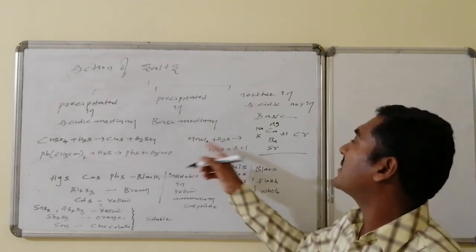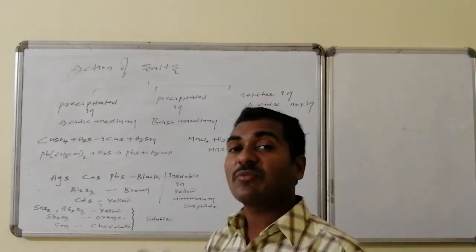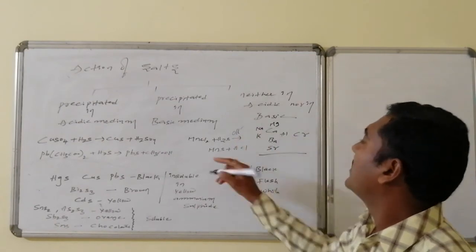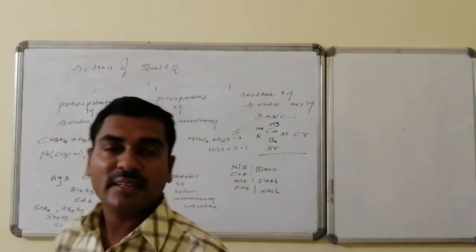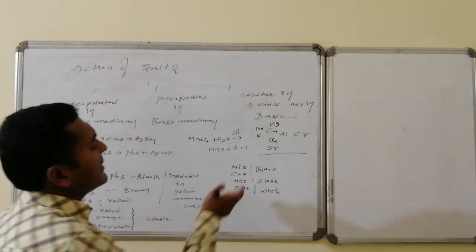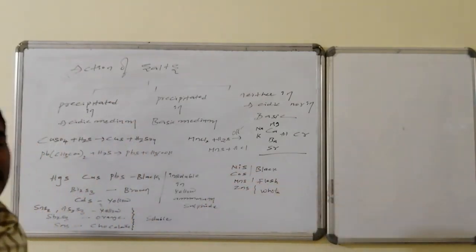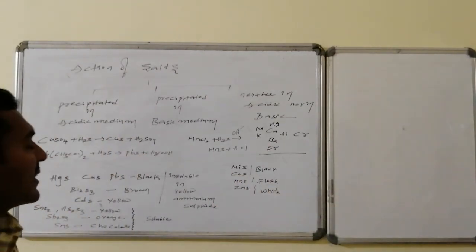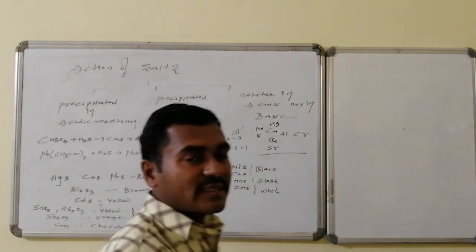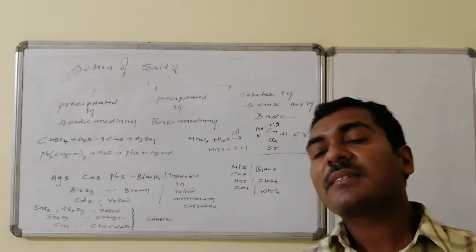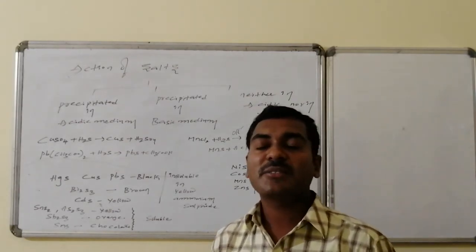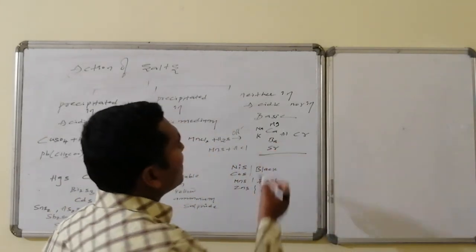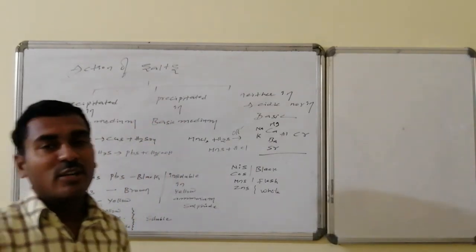Some salts precipitate with H₂S only in basic medium: MnCl₂ forms manganese sulfide, and nickel, cobalt, manganese, and zinc also precipitate. Colors are: nickel sulfide—black, cobalt sulfide—black, manganese sulfide—flesh color, zinc sulfide—white. Some elements like sodium, potassium, magnesium, calcium, barium, aluminium, and chromium do not precipitate with H₂S in either acidic or basic medium. H₂S is thus a valuable tool for cation identification in qualitative and quantitative analysis.